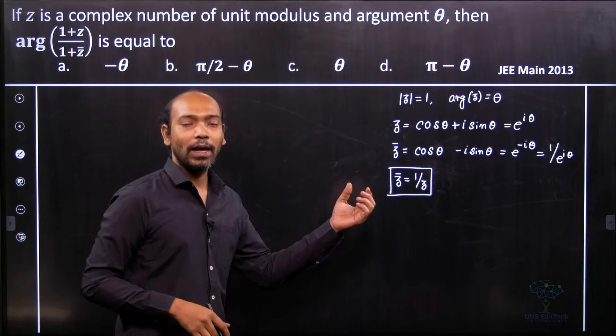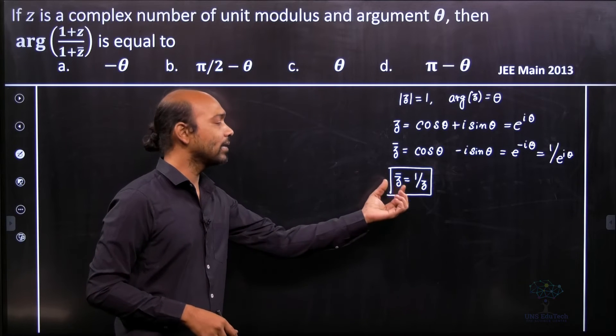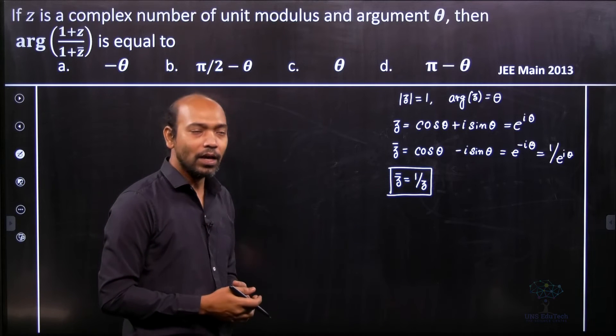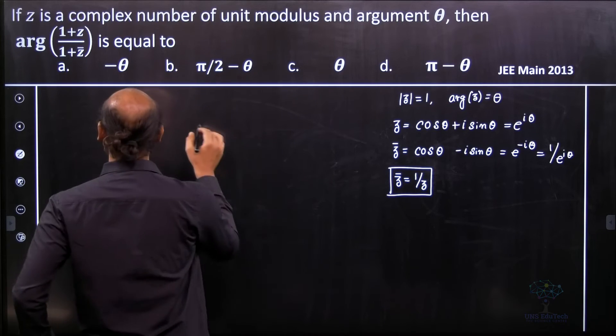So if I'm able to rewrite the complex number and the relation between z and z bar, the complex number is easily simplified.